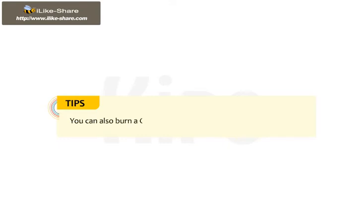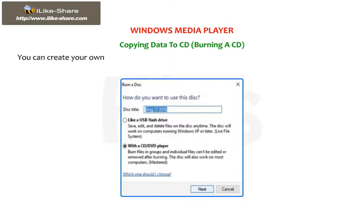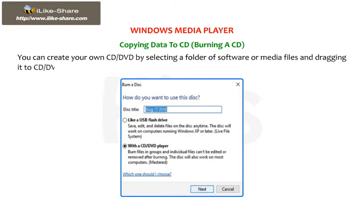Here is a tip: you can also burn a CD using software like Nero, Express Burn, etc. Now let me explain how to copy data to a CD — burning a CD. Saving important information on a CD or DVD is as easy as saving on a hard disk. You can create your own CD or DVD by selecting a folder of software or media files and dragging it to the CD or DVD icon in the This PC folder.